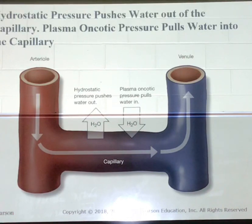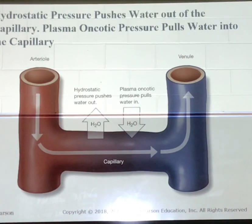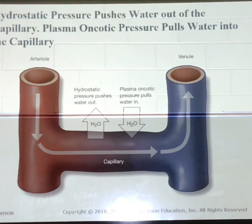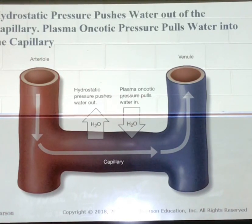A high hydrostatic pressure pushes fluid out. A low hydrostatic pressure pushes less fluid out of the vessel. A high oncotic pressure draws excessive amounts of fluid into the vessel, and a low oncotic pressure does not exert an adequate pull effect to counteract the push of hydrostatic pressure.